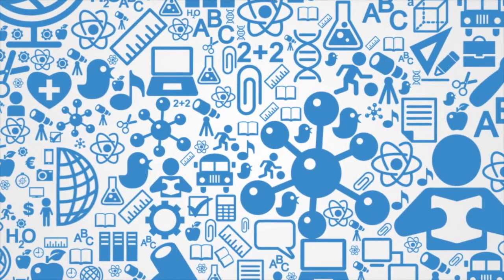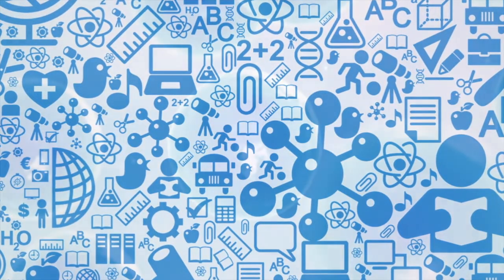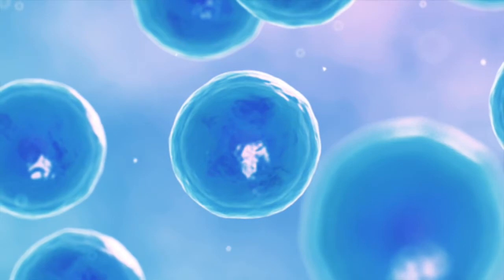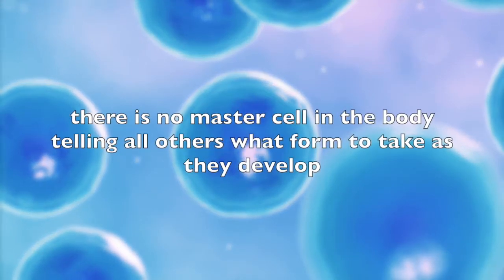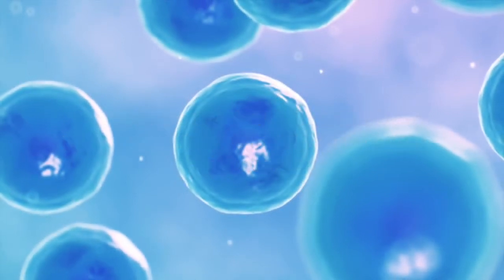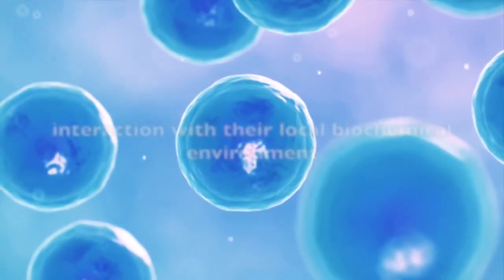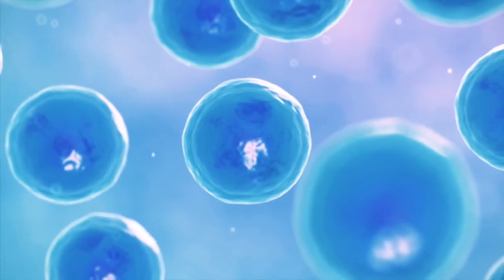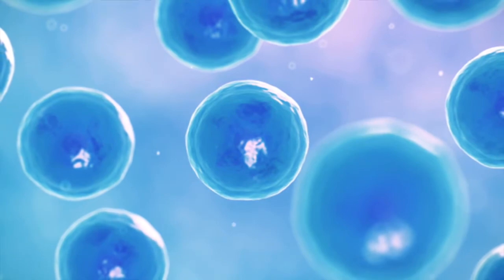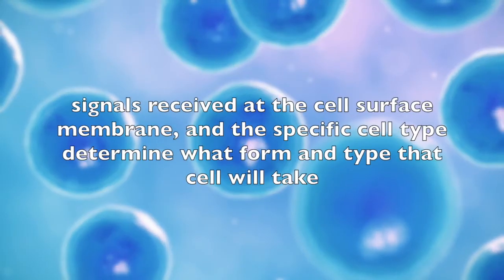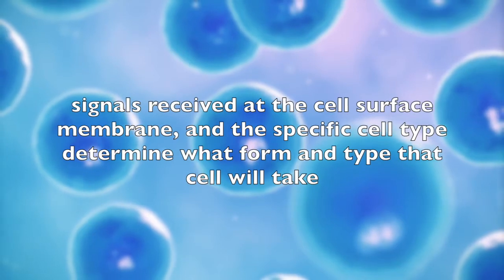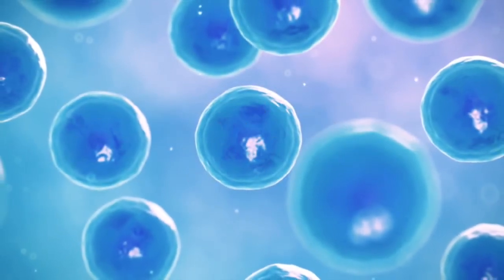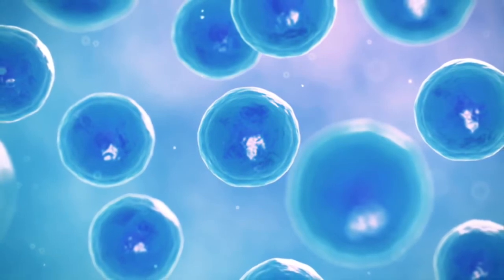For example, the development of the human fetus follows a similar emergence self-organizing process. Every cell in a person's body contains a nearly identical copy of the genome, and there is no master cell telling all others what form to take as they develop. Cells take on their differentiated roles according to their interaction with their local biochemical environments — for each gene in each cell there will be different levels of expression according to conditions around that cell. Signals received at the cell surface membrane and the specific cell type determine what form and type that cell will take.